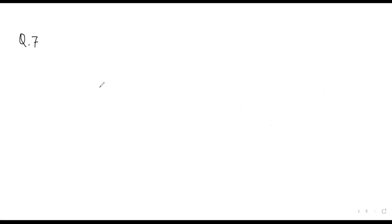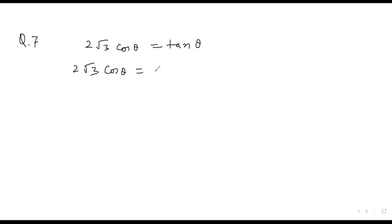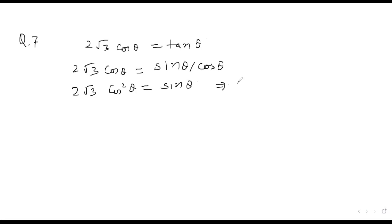Question number 7: find the general value of θ in 2√3 cos θ = tan θ. Writing tan θ as sin θ/cos θ, we get 2√3 cos²θ = sin θ.